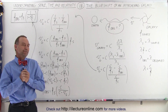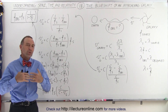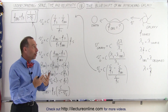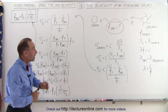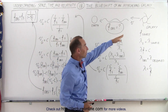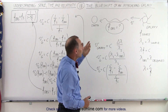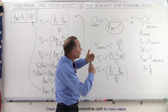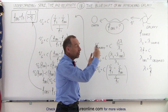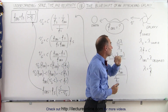Welcome to ElectronLine. Now let's take a look at the blue shifting of light from an approaching object. Let's say that we're on the Earth and we're observing a galaxy that's moving towards us. The question is: what will be the frequency observed of the light reaching us, relative to the frequency of the source?